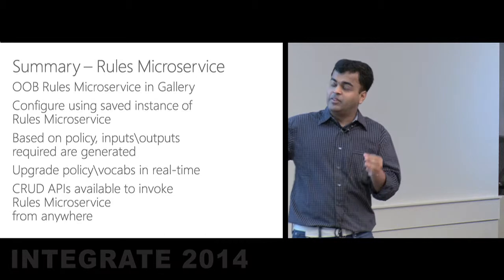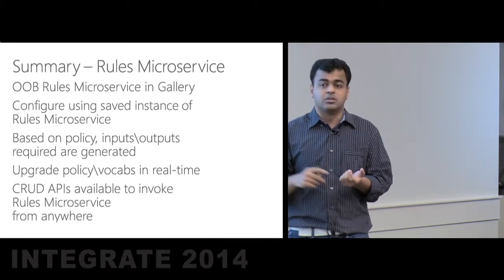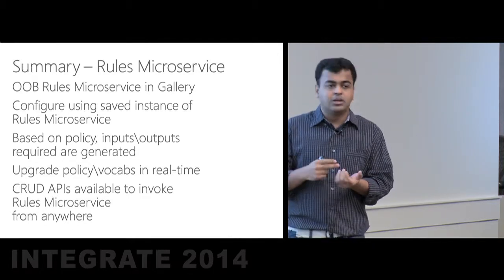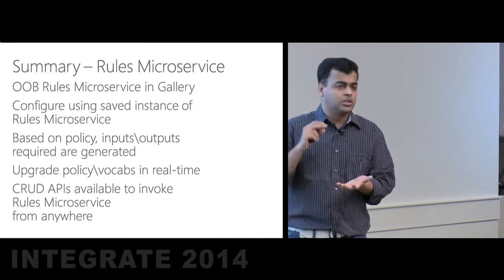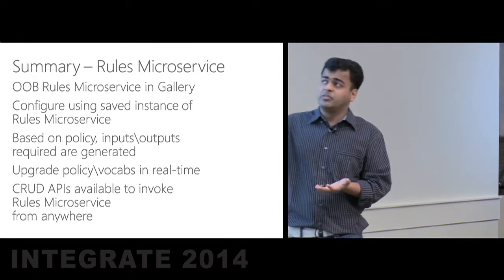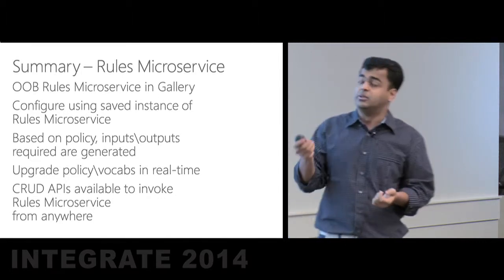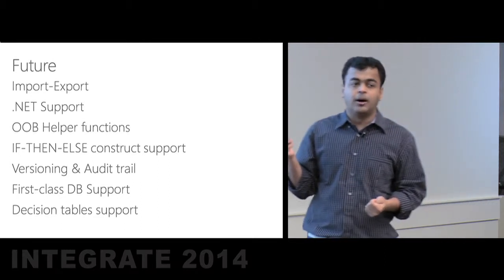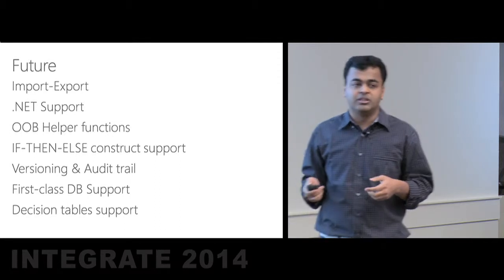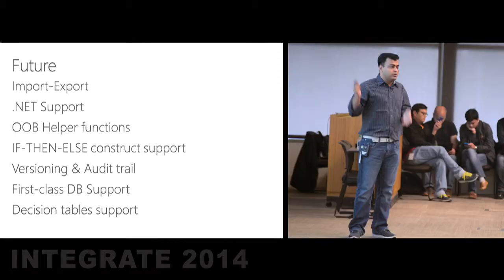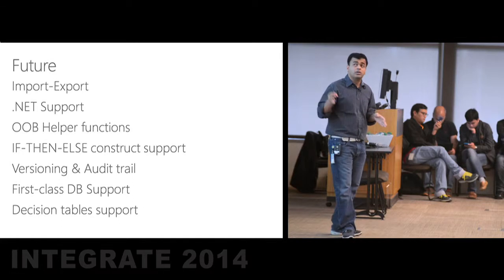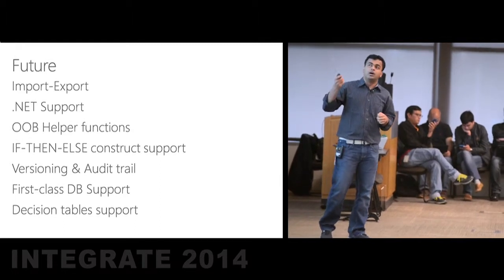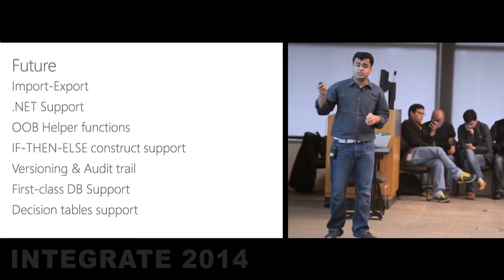To recap before the future slide: we've done fundamental work to support the rules microservice, starting with constant and XML-based vocabularies. Your policy will work flawlessly with all the rules you author using those vocabularies. The next step is to support .NET objects — we know it's a huge ask from everyone who has existing libraries they want to leverage — and that would be our next priority as a first-class source in your vocabularies and rules.